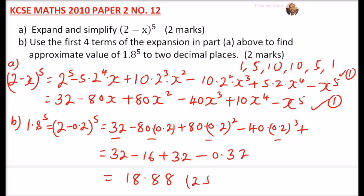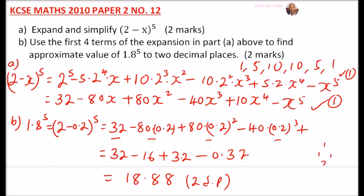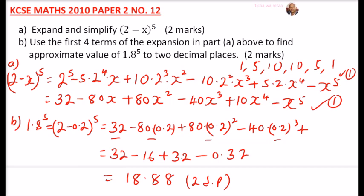The answer to two decimal places is 18.88. The most important skill here is knowing how to expand using the binomial expansion and applying the correct coefficients. If you don't have mathematical tables, you can generate the coefficients using Pascal's triangle: 1, 1 / 1, 2, 1 / 1, 3, 3, 1, and so on. During the exam, you must have a mathematical table or four-figure table as it is a requirement.